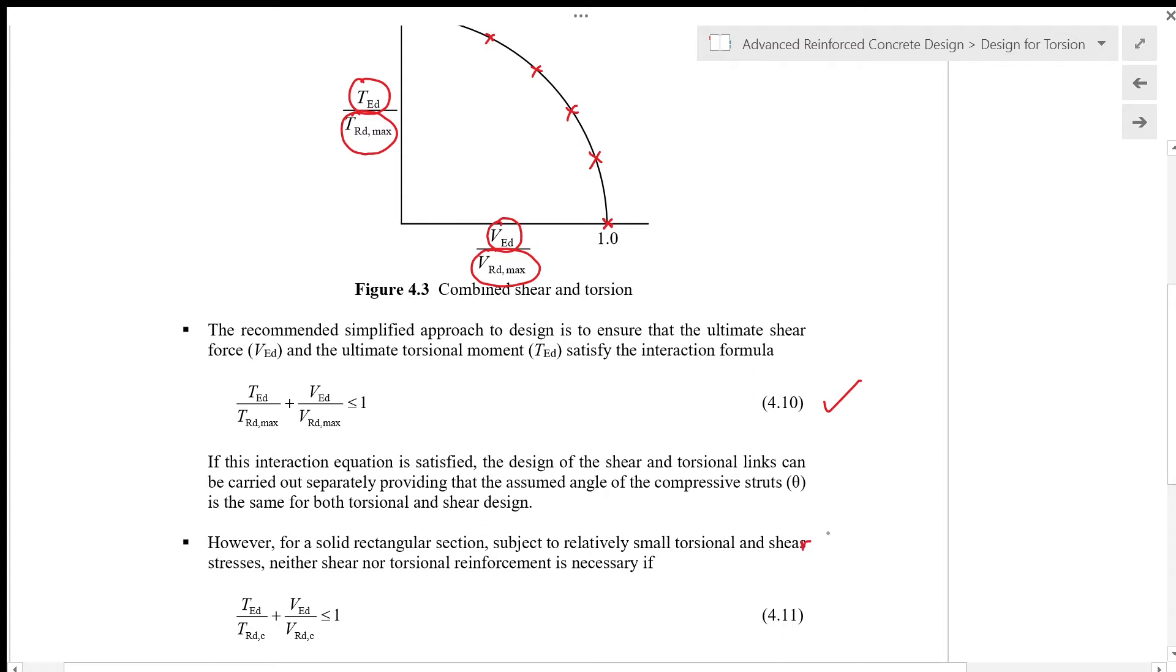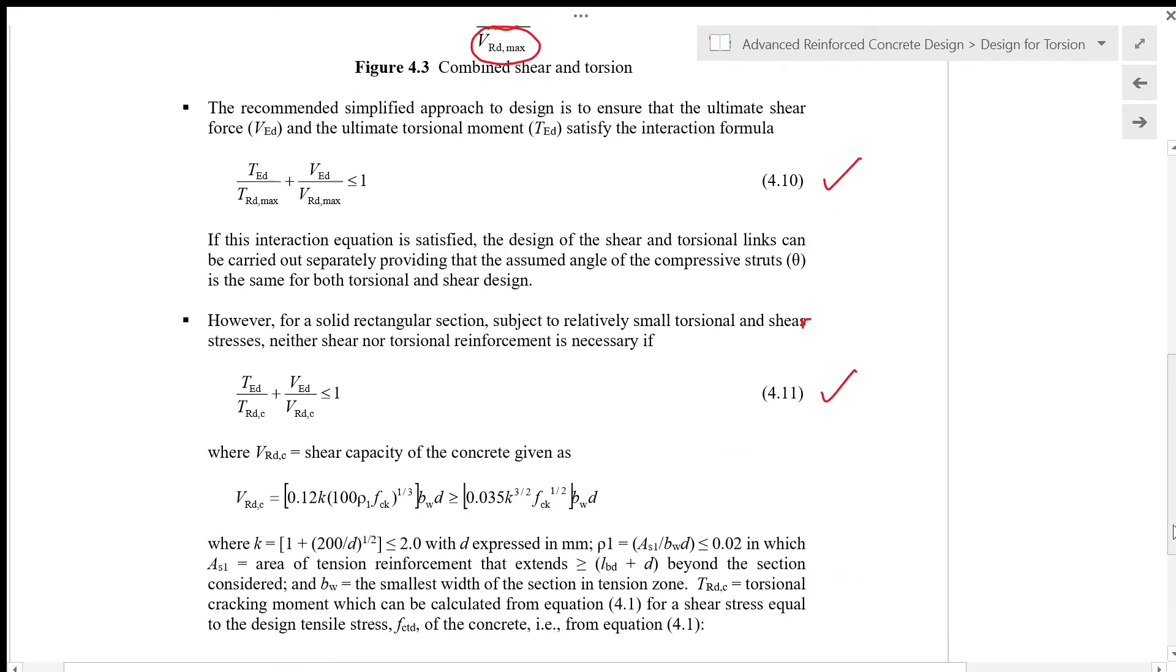However, for a solid rectangular section subject to relatively small torsional and shear stresses, neither shear nor torsional reinforcement is necessary if TED/TRDC + VED/VRDC ≤ 1, which is given in equation 4.11.